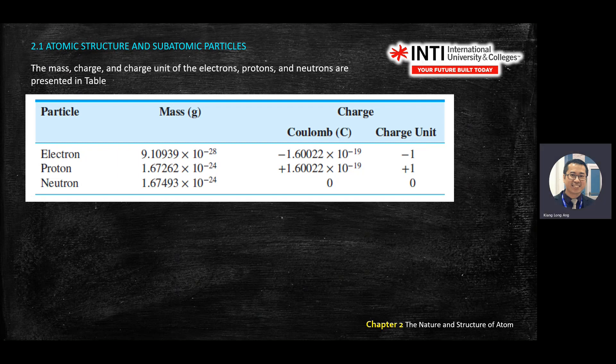Electron is negative charge, proton is positive charge, and positive and negative will try to attract each other. If you put two same charges together, they will repel each other. This is what you learn in your physics and also chemistry.